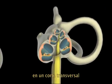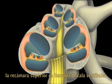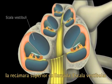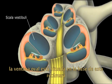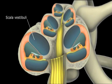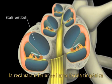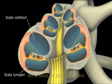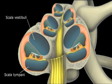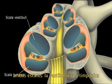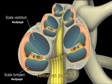In cross-section, the uppermost chamber is called the scala vestibuli. The oval window is situated at the base of this chamber. The lowermost chamber is called the scala timpani, and at the base of this chamber is where the round window is located. Both the scala vestibuli and scala timpani contain perilymph.